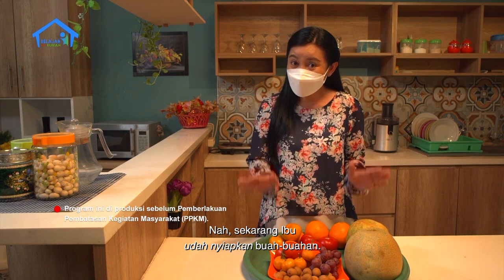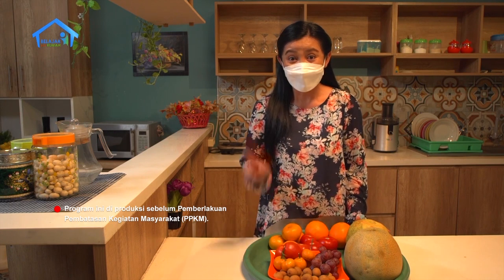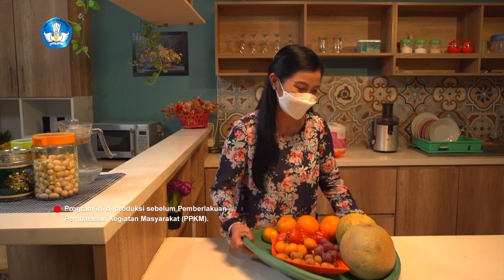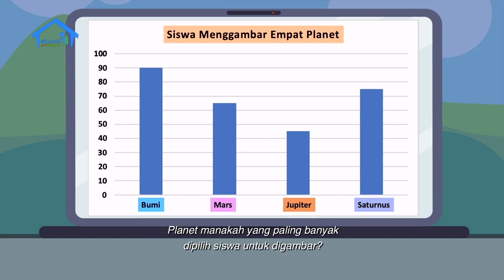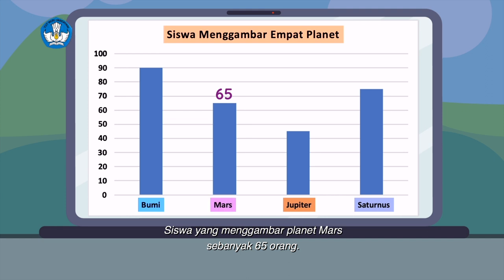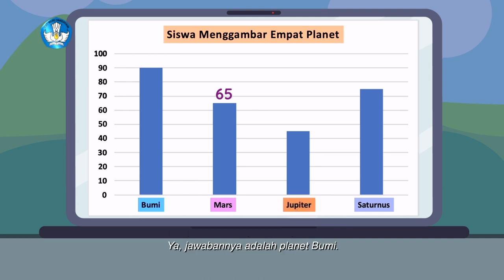Sekarang ibu sudah menyiapkan buah-buahan. Selain sehat, buah-buahan ini ibu gunakan untuk latihan bersama Arya dan mengenal lebih jauh tentang planet-planet. Teman-teman, perhatikan diagram ini. Planet manakah yang paling banyak dipilih siswa untuk digambar? Ya, jawabannya planet bumi. Berapa banyak siswa yang menggambar Mars? Siswa yang menggambar planet Mars sebanyak 65 orang. Selanjutnya, planet manakah yang banyak siswa menggambarkannya dua kali Jupiter? Ya, jawabannya adalah planet bumi.